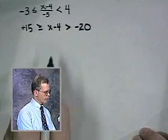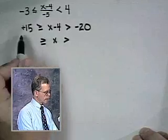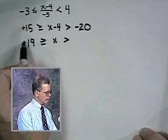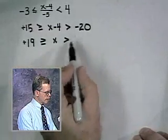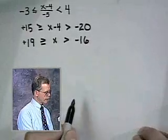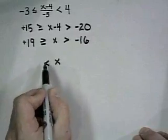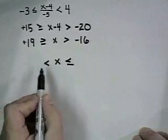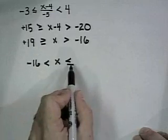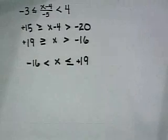Now we can add 4 to all three parts: 15 plus 4 is 19, and negative 20 plus 4 is negative 16. We'll often reverse this to make it easier to see, putting them in numerical order: negative 16 is less than x is less than or equal to positive 19.